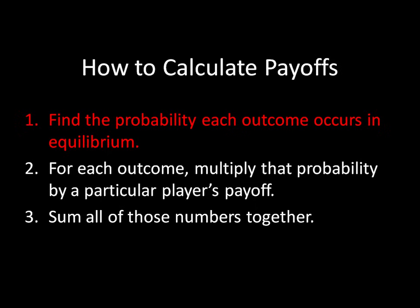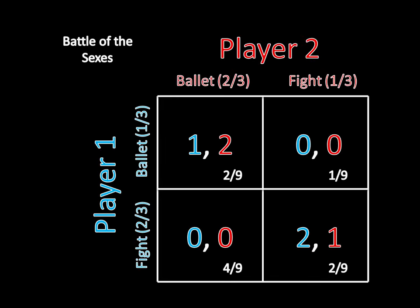We've already found the strategies for the players in the mixed strategy Nash Equilibrium, so we know how player one and player two are each mixing. It's helpful to write those probabilities next to the player's strategies when working this out on paper. Then all you do is multiply across. For example, if we want the probability that both players show up at the ballet, we take one-third from player one — the probability player one goes to the ballet — and since player two's strategy is independent, we multiply by two-thirds. That gives us two-ninths.